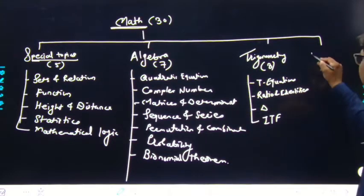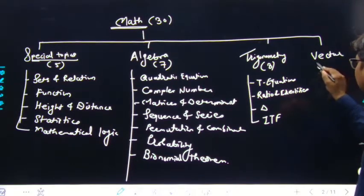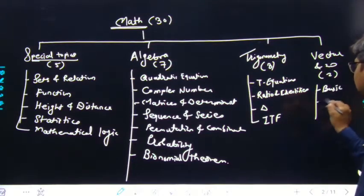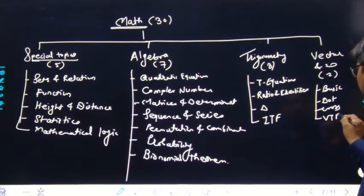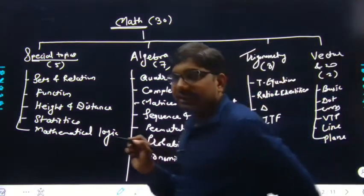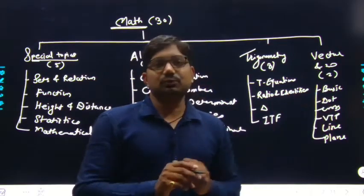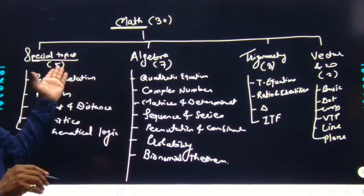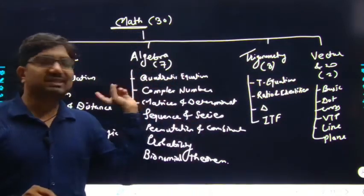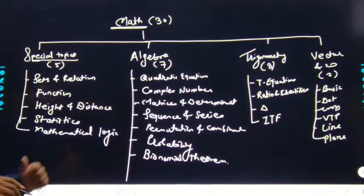Next है vectors and 2D। इससे basically 2 questions पूछे जाते हैं। इसमें पढ़ेंगे: basics of vectors, dot product, cross product, vector triple product, और line and plane। इस तरह इतने topics पढ़ेंगे जिससे 2 questions आएंगे। अब तक discuss किया: 5 + 7 = 12, 12 + 3 = 15, 15 + 2 = 17 — यानी 17 questions इन sections से पूछे जाएंगे।